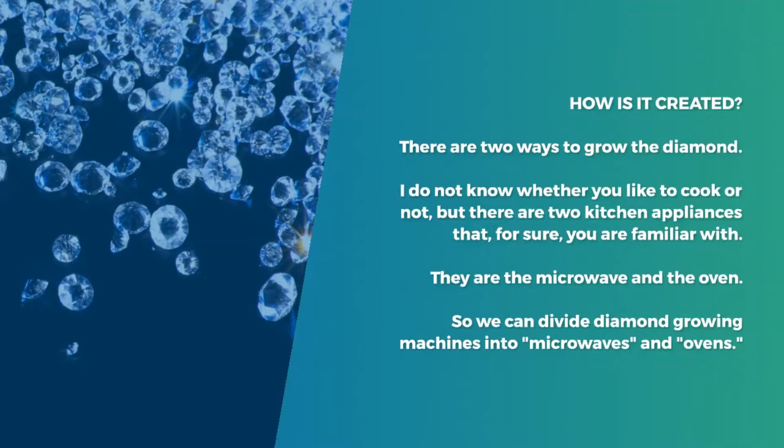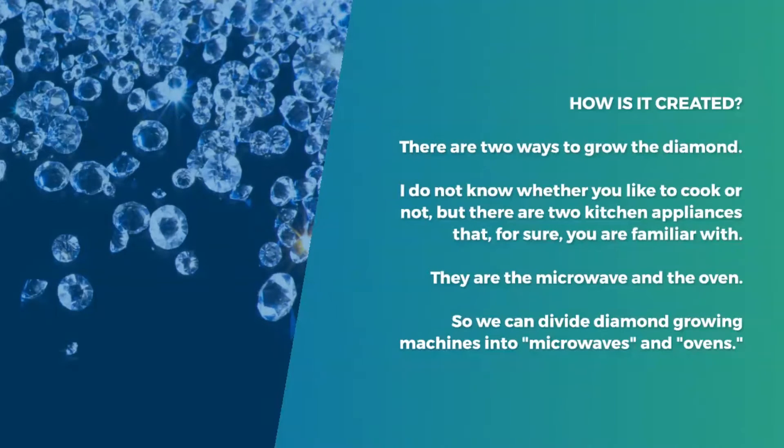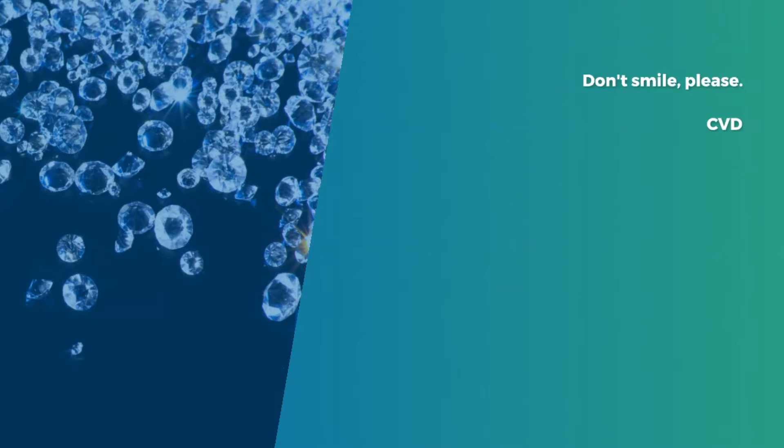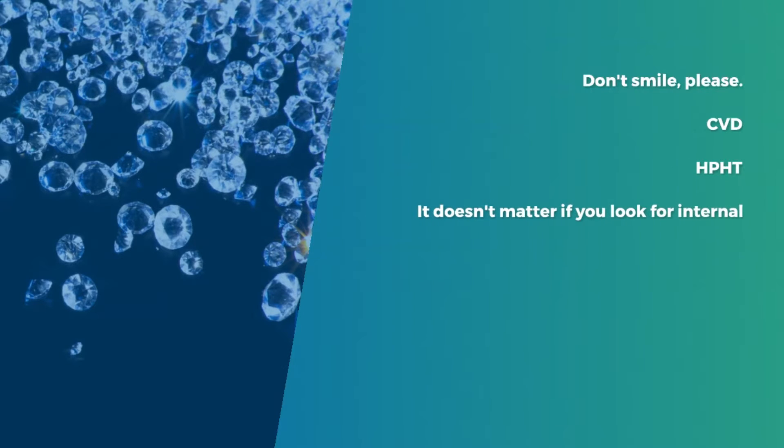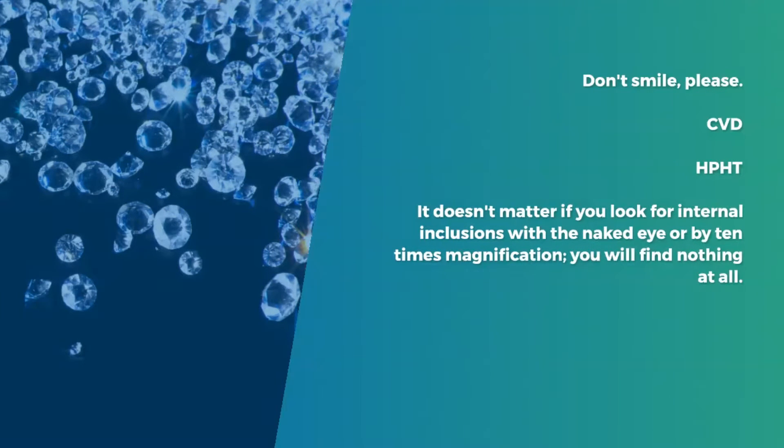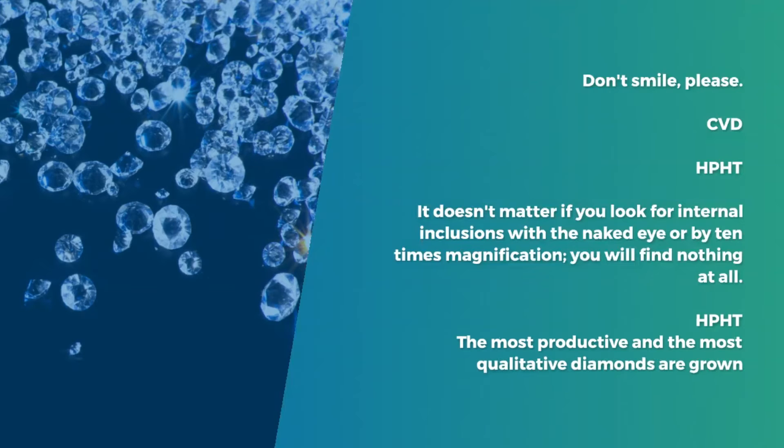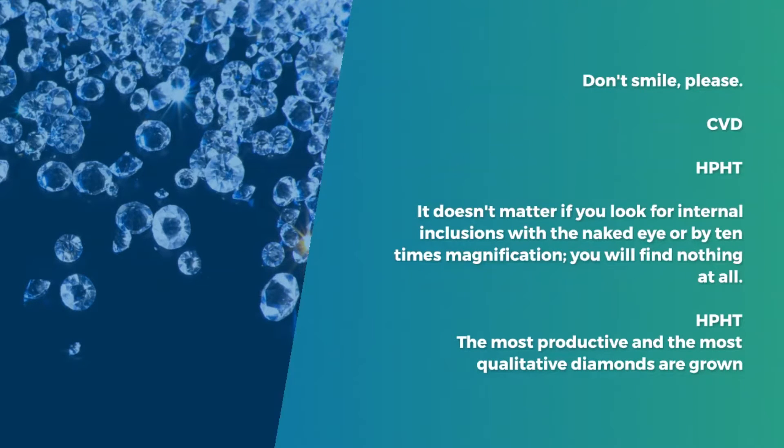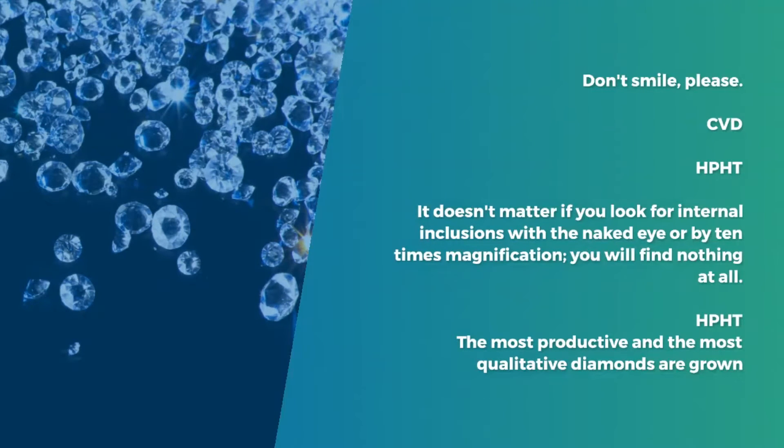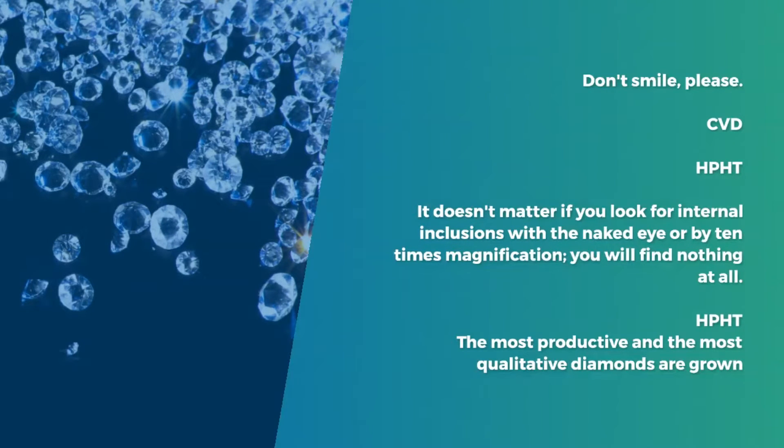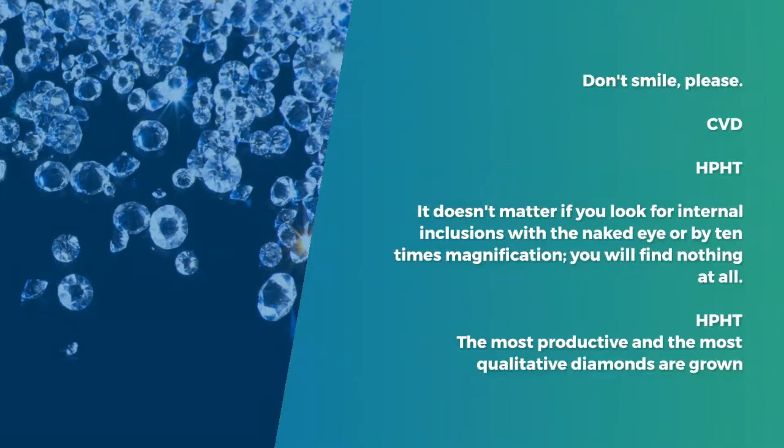Don't smile, please. It doesn't matter if you look for internal inclusions with the naked eye or by 10 times magnification, you will find nothing at all. HPHT - the most productive and qualitative diamonds are grown in a kind of oven by HPHT technology, which means high pressure, high temperature. Compared with the kitchen oven, the modern HPHT oven weighs like a battle tank, up to 60 tons.